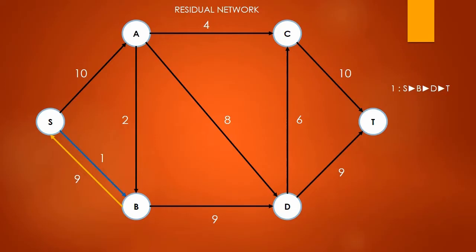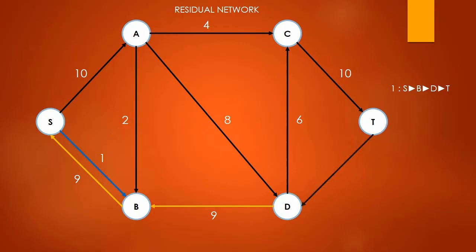Looking at S to B, the maximum capacity is 10 and we already have 9 pushing back, so we can allow 1 forward to saturate the edge. For edge B to D, the maximum capacity is 9 and we are already pushing back 9, so we can't push anything forward. For D to T, the maximum capacity is 10 and we are pushing back 9, so we can push 1 more forward.